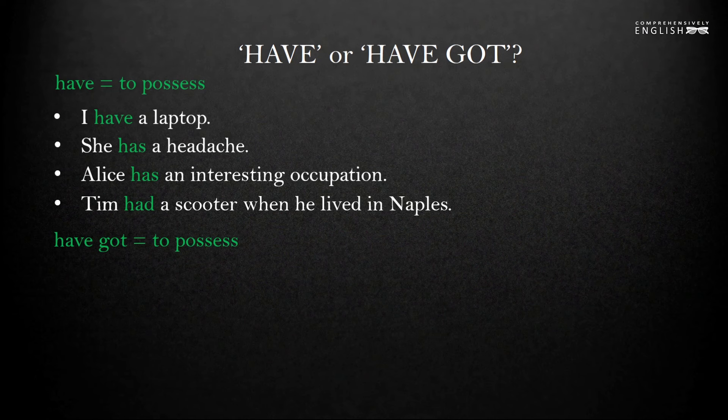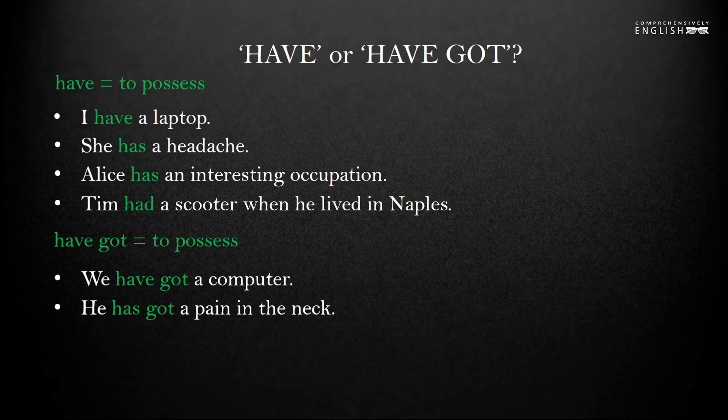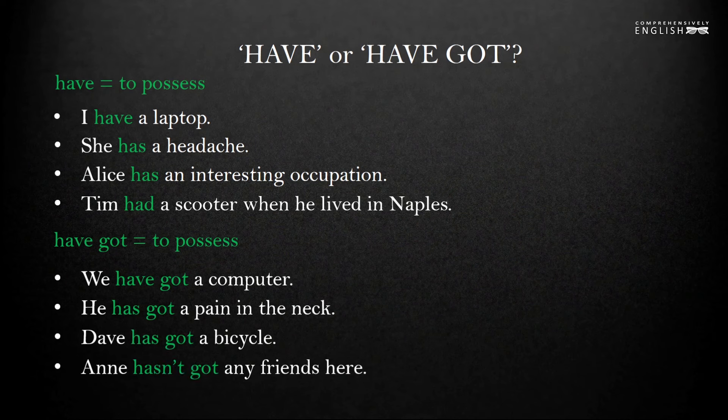Have got also means to possess something. It is synonymous to the verb to have. We can use it in the same situations, with only one difference: have got is the synonym of to have only in the meaning to possess something or to have a characteristic of something. So we can say I have got a laptop or she has got a headache. But in expressions where the verb have is used with a different meaning — for example, to have breakfast — have got will never replace it. We can say we have got a computer, he has got a pain in the neck, Dave has got a bicycle, or Anne hasn't got any friends here. From these examples we see that we can mostly use have and have got interchangeably when we want to say that we have something.